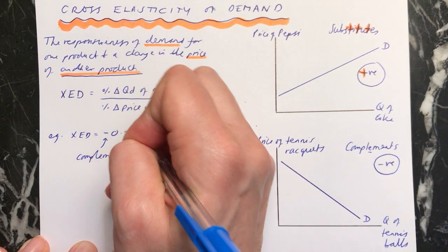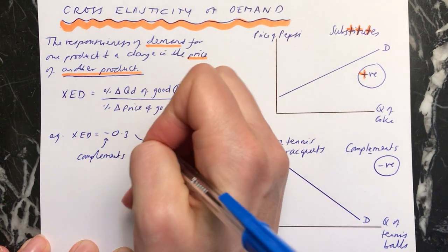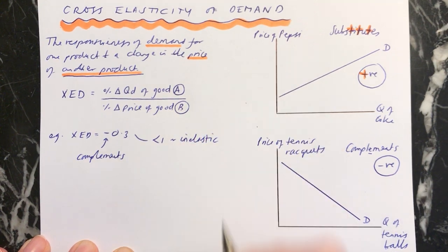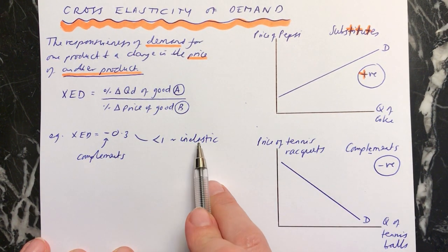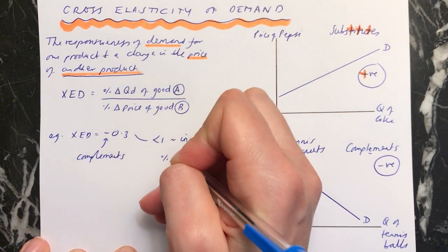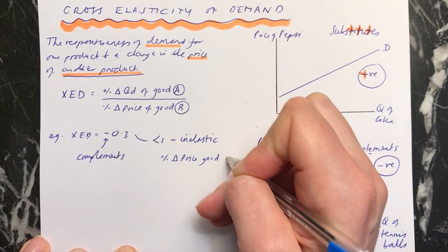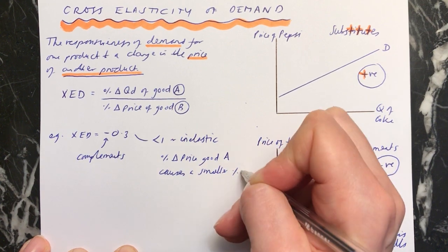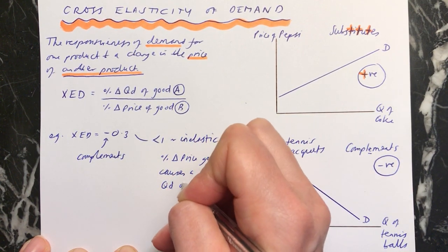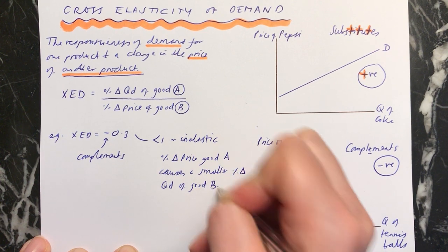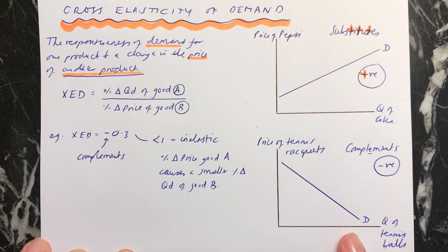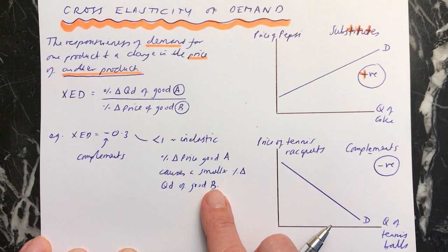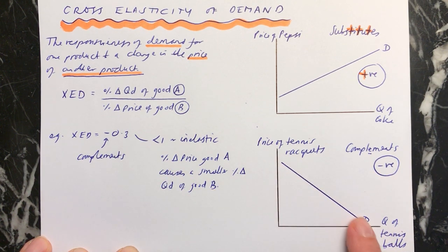And 0.3, remember to cover up your negative sign, 0.3 is less than 1, and therefore you know that the XED is inelastic. So we know that a percentage change in the price of good A causes a smaller percentage change in the quantity demanded of good B. That's how you'd write it out. Because they're complements, when the price of one goes up, the quantity demanded of the other one goes down. They're doing opposite things if it's negative, negative correlation.